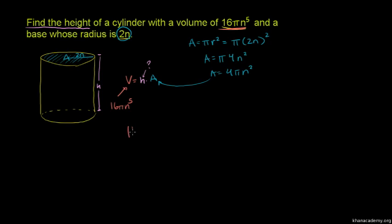We have 16π n to the fifth - that's our volume. That is equal to our height times the area, times the area of the base or the top of our cylinder, times 4π n squared.